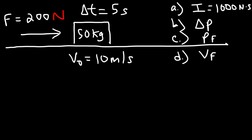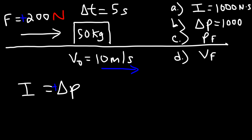For Part B, what is the change in momentum? According to the impulse-momentum theorem, the impulse equals the change in momentum. Notice that the force vector and the velocity vector are in the same direction, so the force is accelerating the object and increasing its momentum. Therefore the change in momentum is positive 1000 kilograms times meters per second.